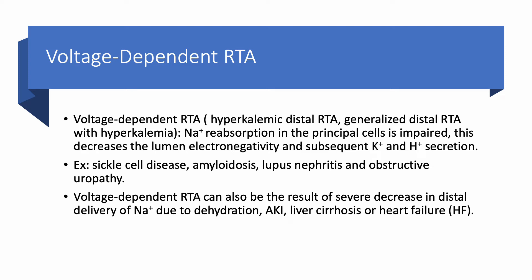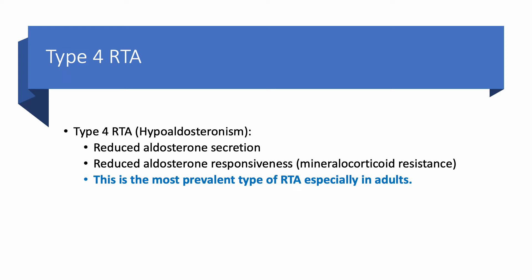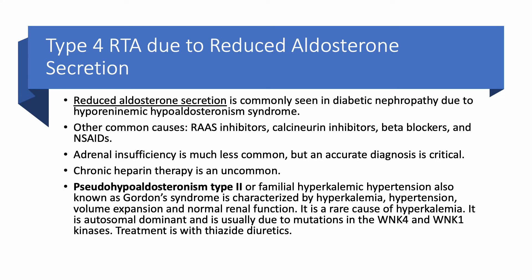Type 4 RTA is, by definition, hypoaldosteronism — either due to reduced aldosterone secretion or aldosterone resistance. The most common cause of reduced aldosterone secretion is diabetic nephropathy due to hyporeninemic hypoaldosteronism. This is by far the most common type of type 4 RTA. Patients with diabetic kidney disease, even at earlier stages like stage 3, can present with hyperkalemia because of hyporeninemic hypoaldosteronism.